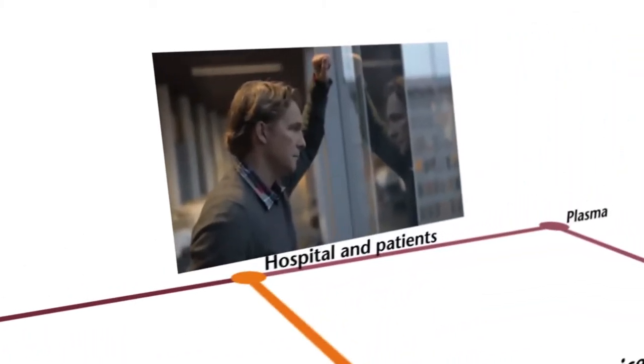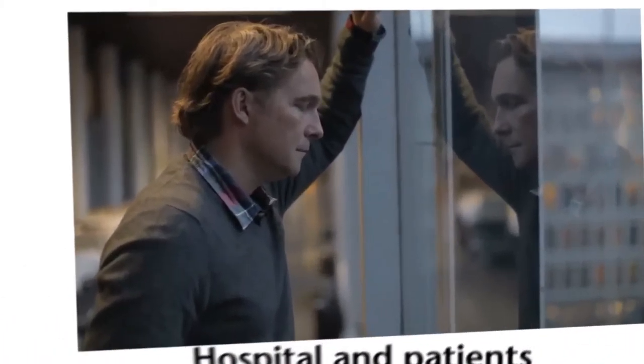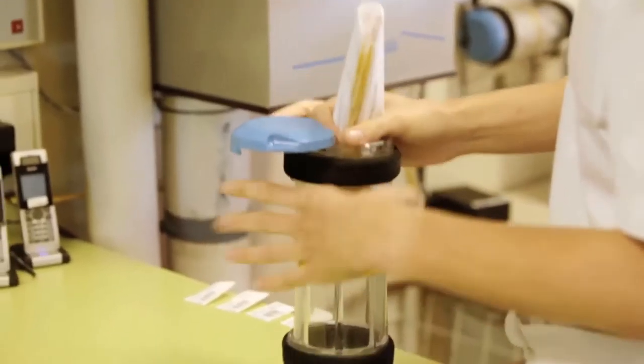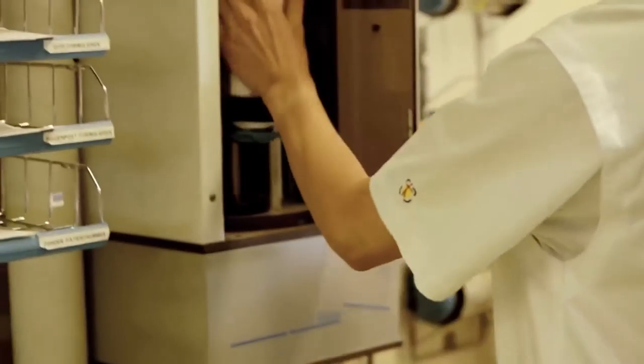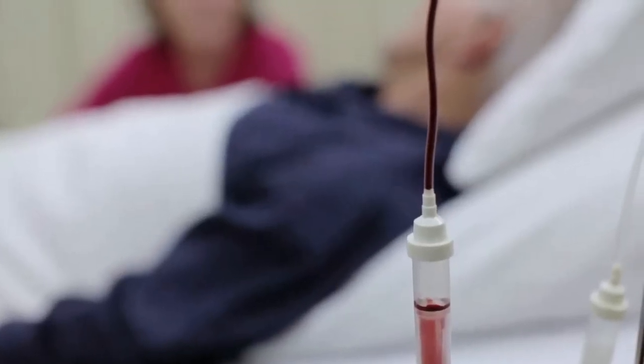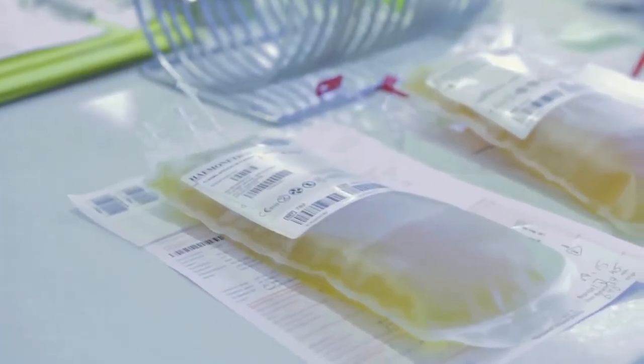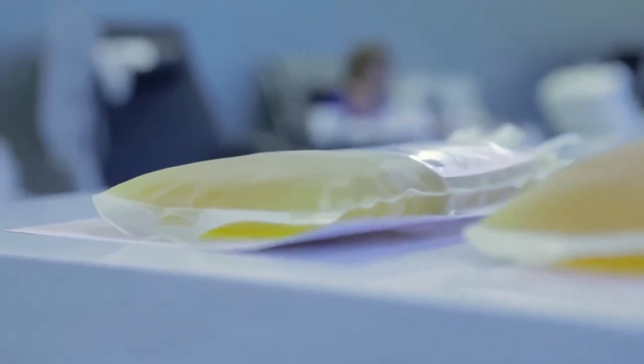Sanquin delivers the blood platelets, red blood cells and the plasma to hospitals. Patients with a severe loss of blood from operations or injuries, or who suffer from particular types of cancer, receive red blood cells. Blood platelets mainly go to patients with a blood disease, such as leukemia. Plasma is given to burn victims and people who have suffered massive blood loss.